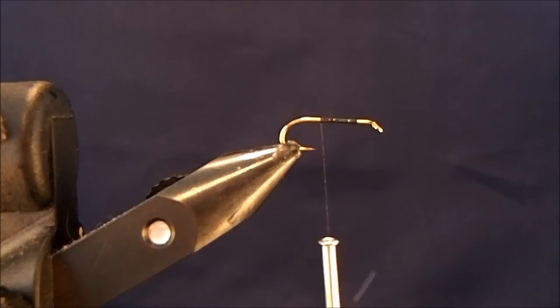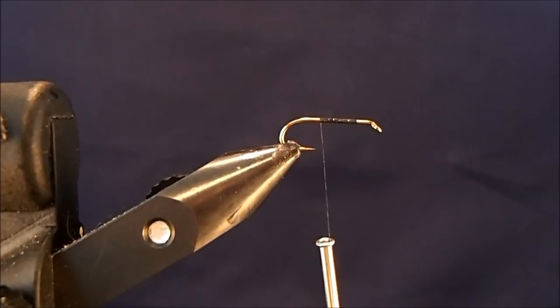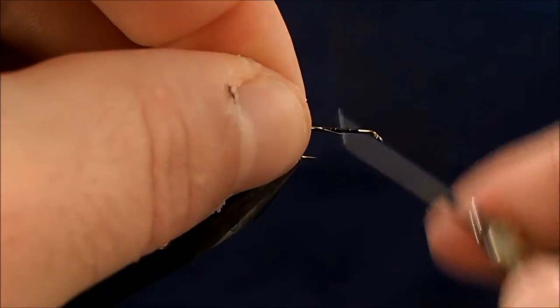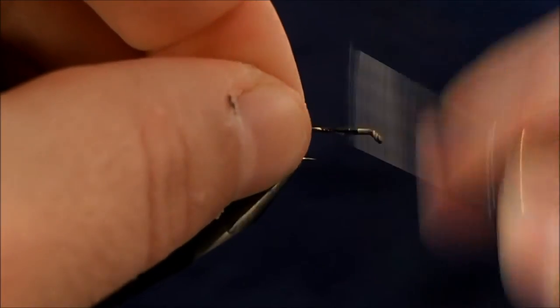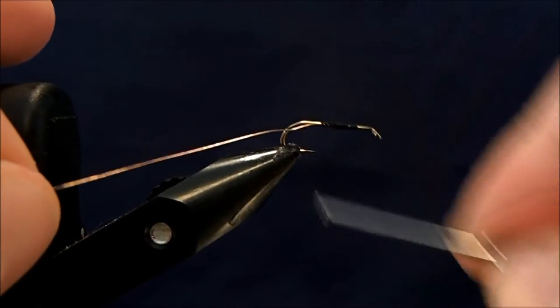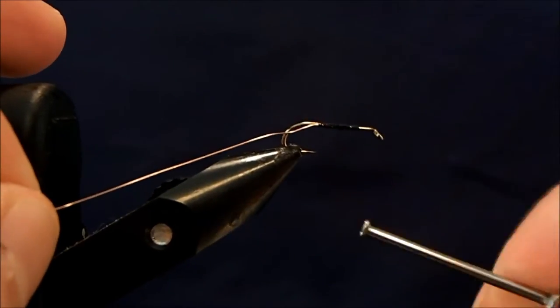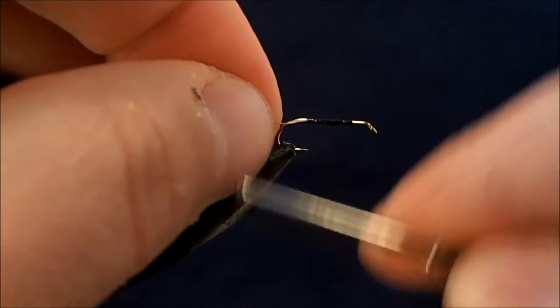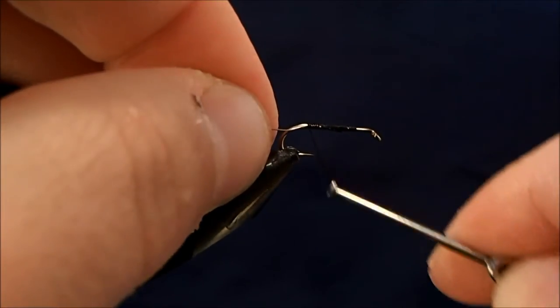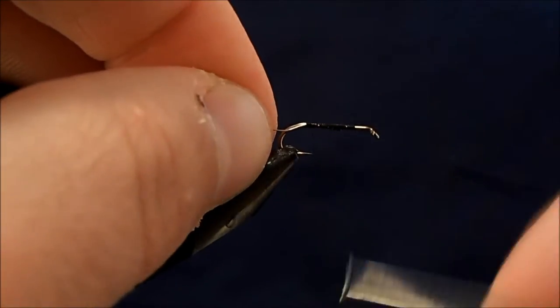Now with this, I'm going to tie in a ribbing material, and I'm going to use just a thin, small copper wire for this. So I'll just lay that right alongside and tie that in. Bring your thread wraps down to about the furthest down before it makes a bend.